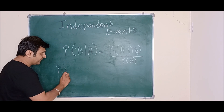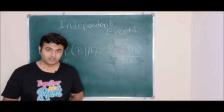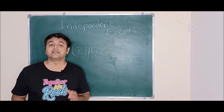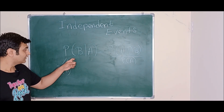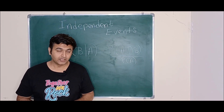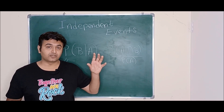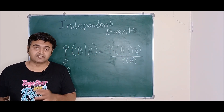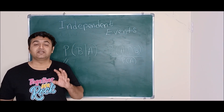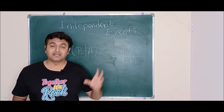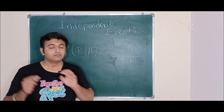Now it may happen that the probability of B comes out the same as the probability of B given that event A has already occurred. When such a thing happens, we say that A and B are independent events — meaning the occurrence of event A is not affecting the probability of B. Just a word of caution: don't get confused with mutually exclusive events. Mutually exclusive events are defined with respect to sets — if the intersection of A and B is empty, they are mutually exclusive. Independent events are related to probability — if the probability of B is not affected by the occurrence of event A, then A and B are independent events.